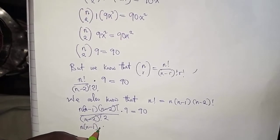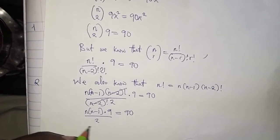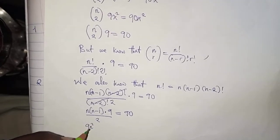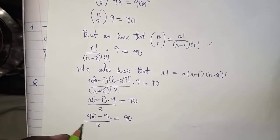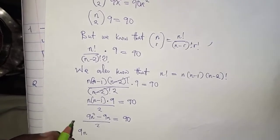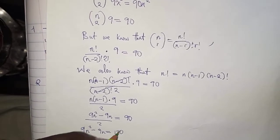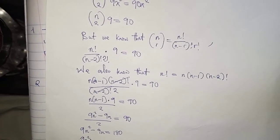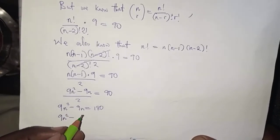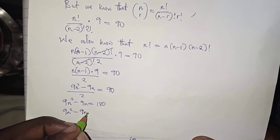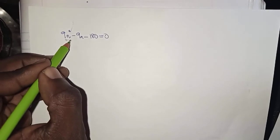After cancellation, we get n(n minus 1) over 2, multiplied by 9, equal to 90. Expanding the numerator gives us 9n squared minus 9n over 2, equal to 90. Cross-multiplying gives 9n squared minus 9n equals 180. Rearranging: 9n squared minus 9n minus 180 equals 0.